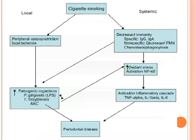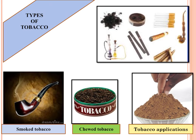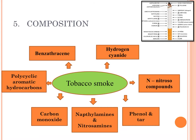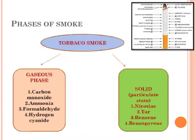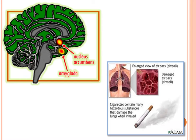This is a well-known flow chart of local and systemic problems. Classification of habits covers sorineurosis, occupational habits, and miscellaneous. Coming to types of tobaccos, you can just mention the names, then the composition. If you can present it in a structured way — tobacco smoke, gaseous phase, solid phase, and main components — that's good.